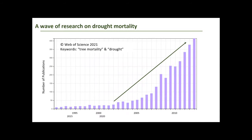This has sparked a wave of research on drought mortality, indicated here by the number of publications taken from the Web of Science using the keywords 'tree mortality' and 'drought.' During these early phases of observations in the early 2000s, there has been a sort of linear increase in the number of publications, as people become more and more interested in investigating the linkage between climate extremes and how this affects forests.